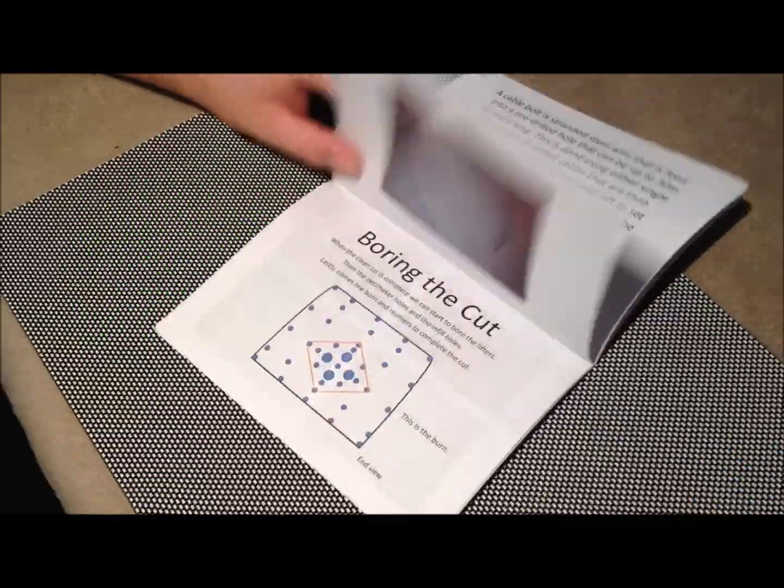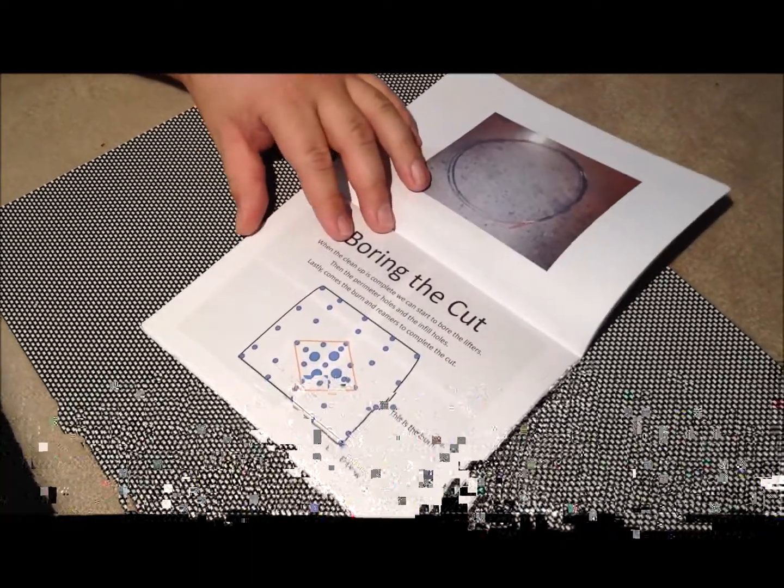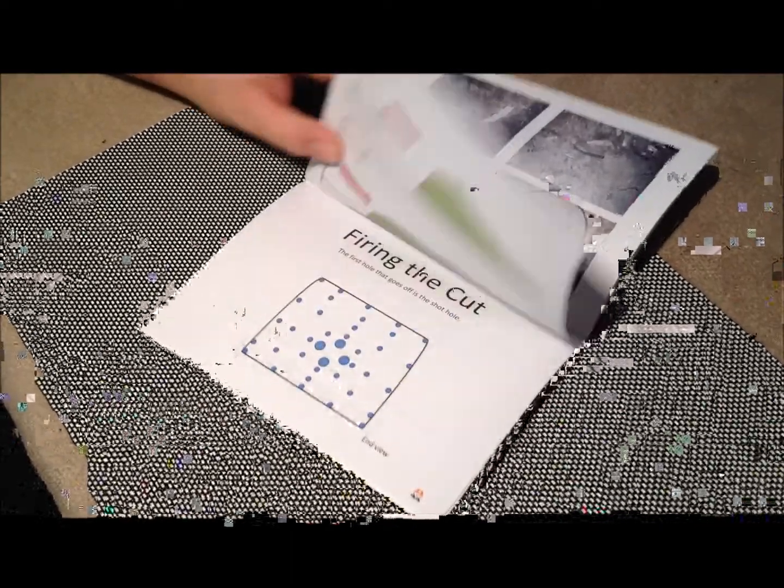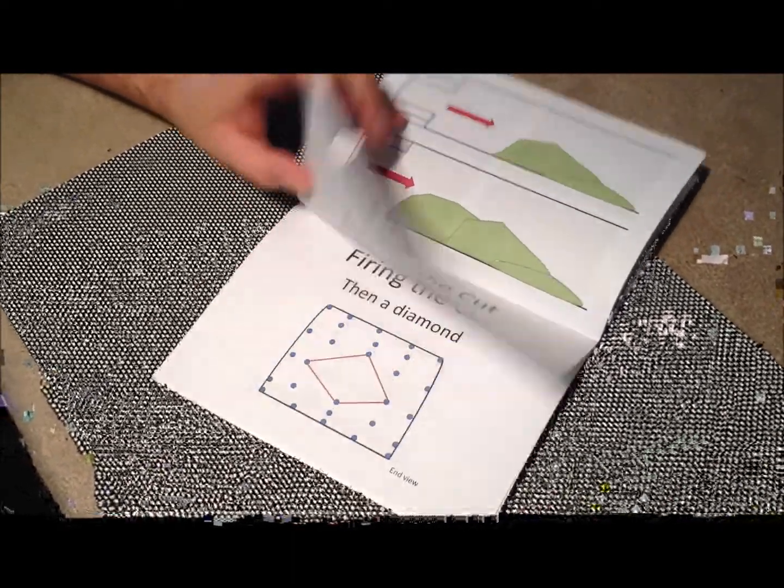We go through what structures have to be put in and how they come. We talk about boring the cut, how the jumbo operator actually bores it out, and about firing the cut. We explain why reamers are so important to how the cut comes out and fires.